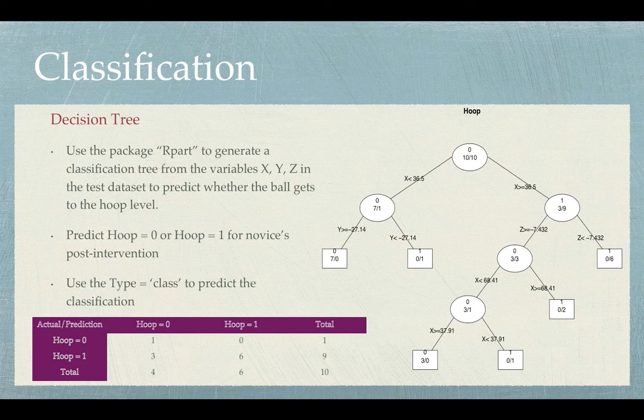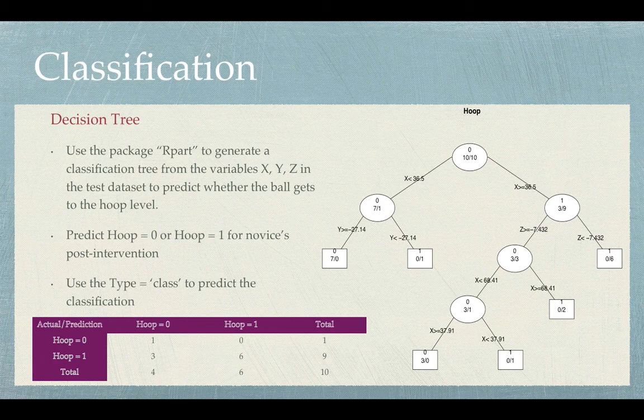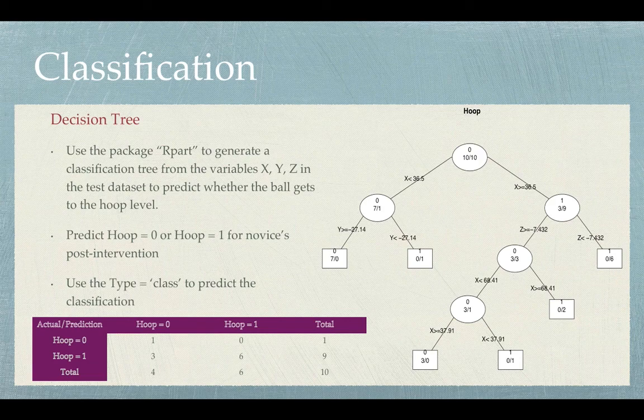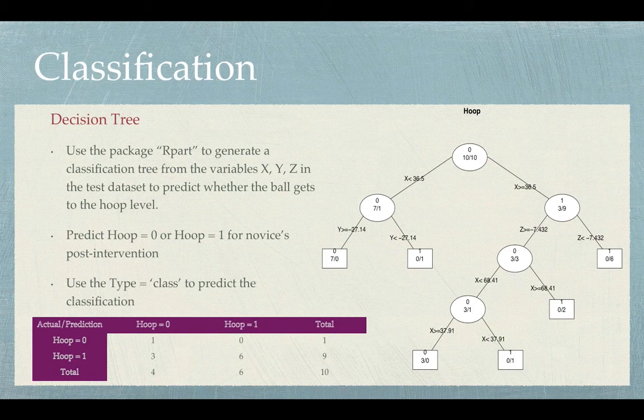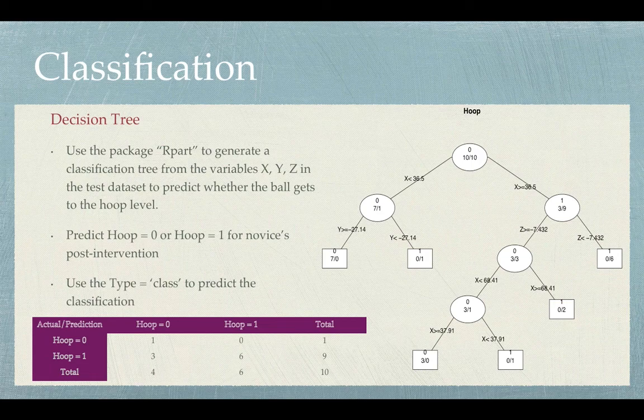For classification, we did a decision tree using the package rpart. We generated this classification tree from the variables x, y, and z to predict whether the ball gets to the hoop level. We used a data set of twenty, in which ten get to the hoop level and ten didn't get to the hoop level.